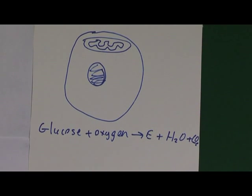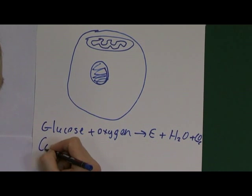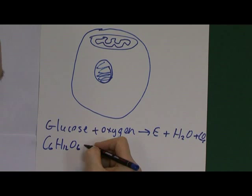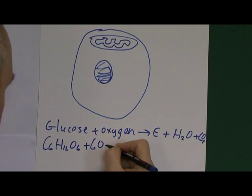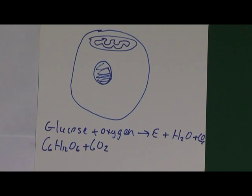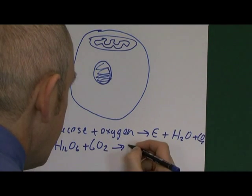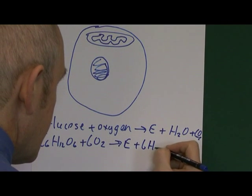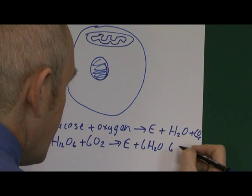And if you're interested in the chemistry, glucose is C6H12O6. That's combined with six molecules of oxygen — and it's an important point that oxygen is always O2, meaning there are two oxygen atoms in a molecule of oxygen. So one molecule of glucose plus six molecules of oxygen combines to give the energy, plus six molecules of water and six molecules of carbon dioxide.